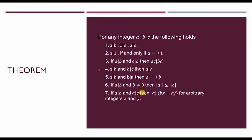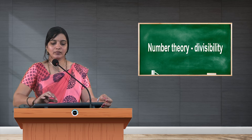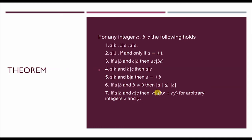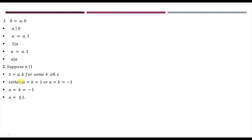Now we'll see the proof of this theorem. For condition 1: we can write 0 = a×0, so a divides 0. Similarly, a = a×1, so 1 divides a, and a = a×1 so a divides a.